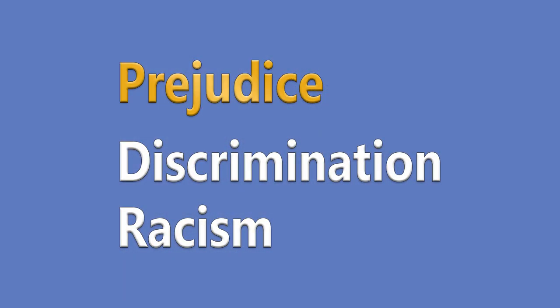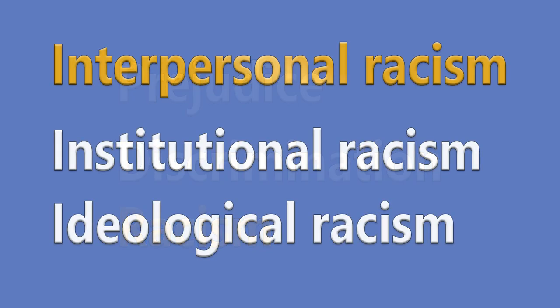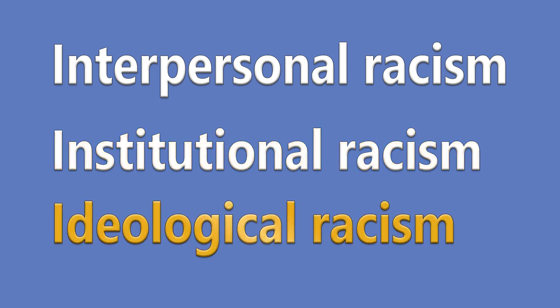In sum, prejudice is prejudging or having negative attitudes or opinions about someone based on a group they are a part of. Discrimination involves treatment that is unfavorable or unfair based on a group that someone is a part of. And racism can be defined in many ways, but we talked about the three I's: interpersonal, which are individual acts of racism; institutional, which are racist structures; and ideological, which are larger racist belief systems that exist in society. Thanks for watching — be sure to click like and subscribe.